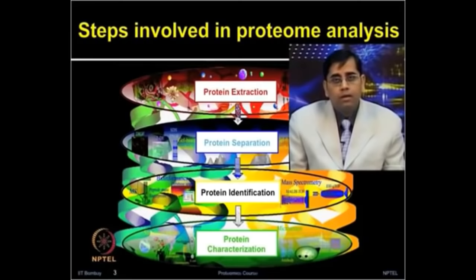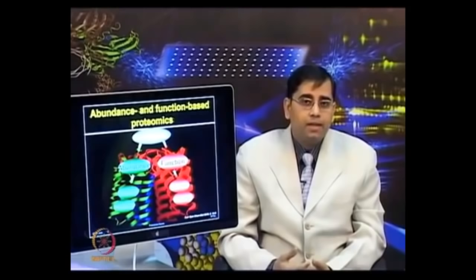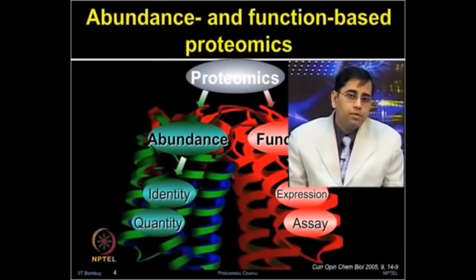The functional characterization of proteins using novel proteomic platforms opens new horizons for exploration in biology. The proteomic discipline can be grouped under two major disciplines: abundance-based proteomics, which aims to measure the abundance of protein expression, and functional proteomics, which aims to determine the role of proteins by addressing protein interactions and their biochemical activities.